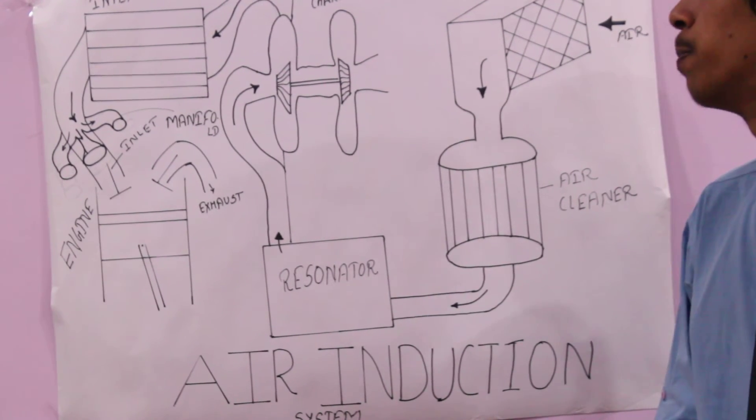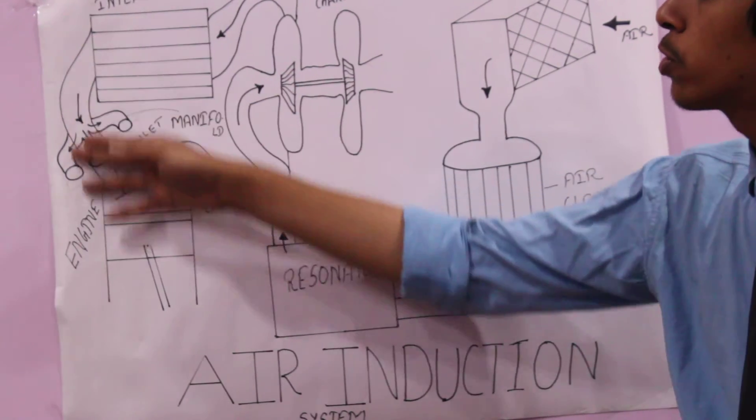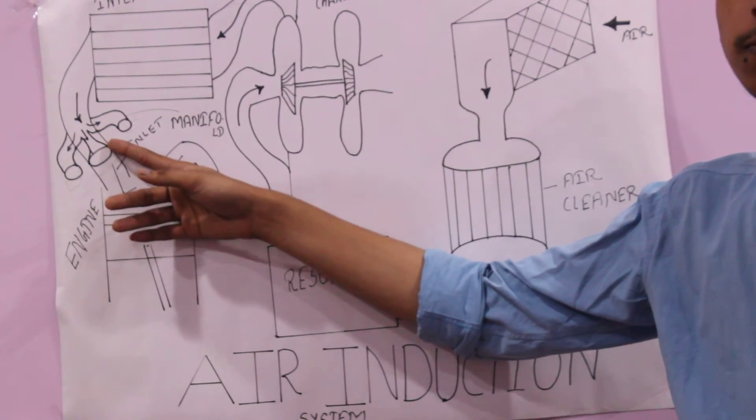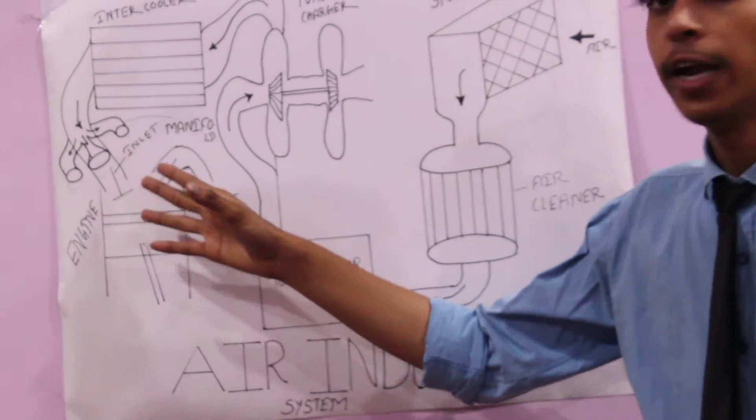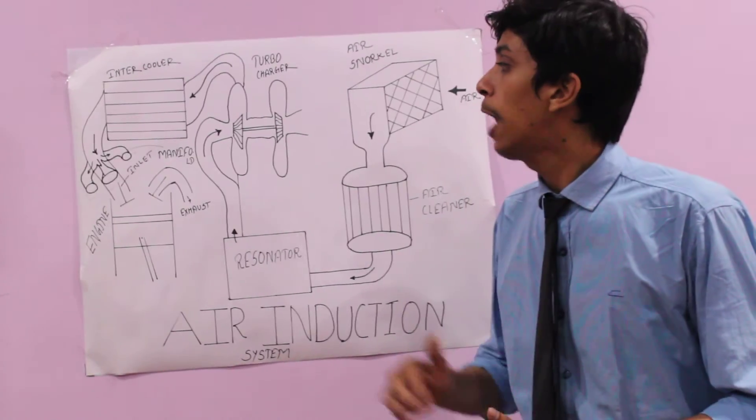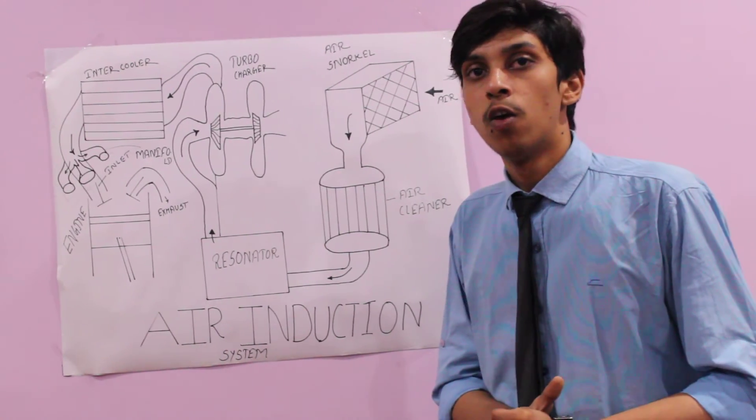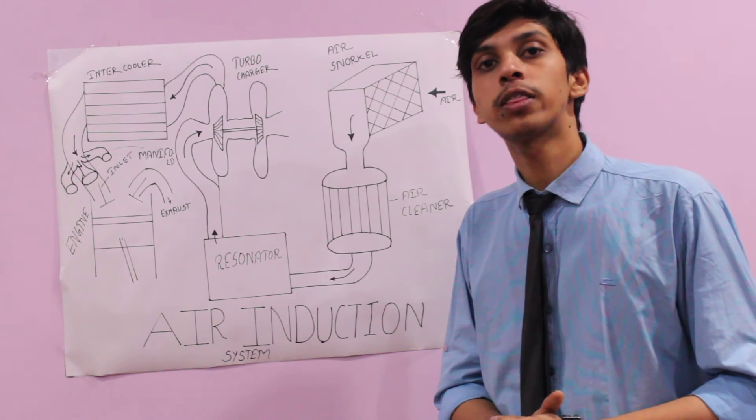After this intercooler, the air goes to the inlet manifold. The inlet manifold sends the air into the different cylinders. With the help of the inlet manifold, we can throw the fresh charge into the cylinder.